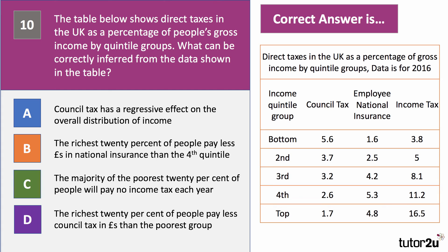Question ten: the table below shows direct taxes in the UK as a percentage of gross income by quintile groups — the population split into five groups of 20%, from the poorest bottom quintile to the richest top quintile. The three taxes shown are council tax, employee national insurance, and income tax. What can be correctly inferred from the data? Have a go at question ten.